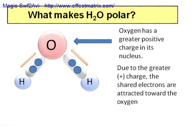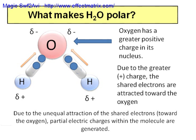So, due to the greater positive charge in the oxygen, the shared electrons are attracted towards the oxygen. And due to the unequal attraction of the shared electrons, a partial negative charge at the oxygen end and a partial positive charge at the hydrogen end are generated. That's what makes water polar.